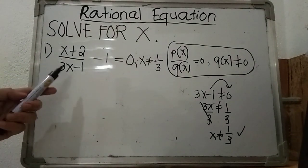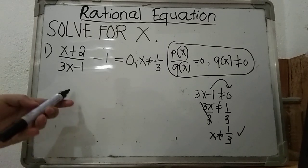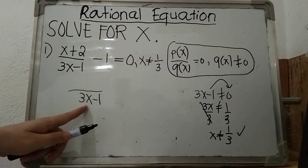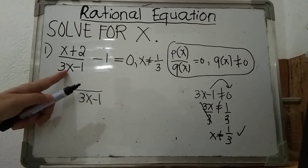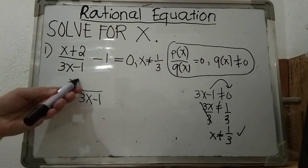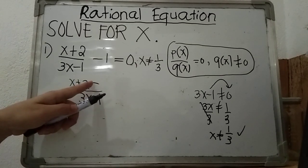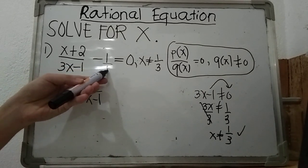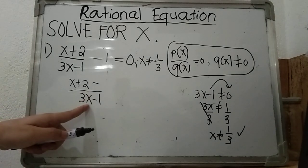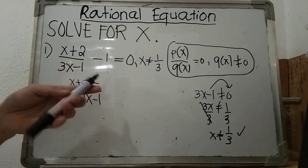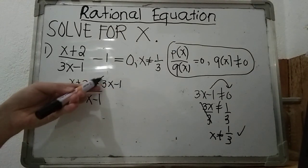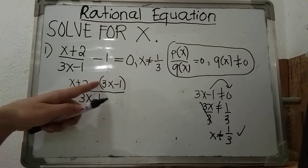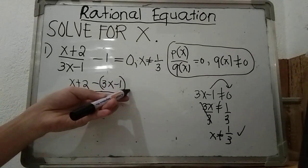This is our second way: we are going to combine the first term and second term into one single expression using LCD, or least common denominator. The LCD is just our denominator 3x minus 1. So 3x minus 1 divided by 3x minus 1 is 1, times the numerator gives x plus 2. Then 3x minus 1 divided by 1 times 1 gives 3x minus 1 itself, and we enclose that in parentheses because we are going to distribute the minus sign. Equals 0.